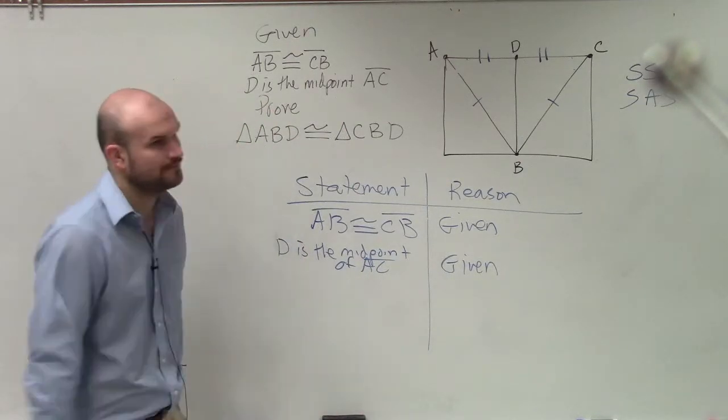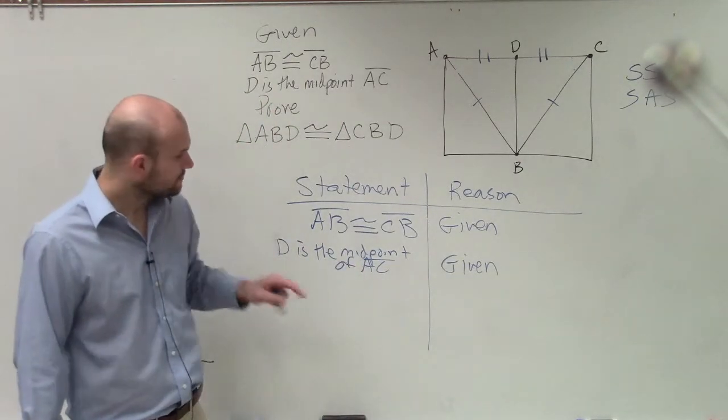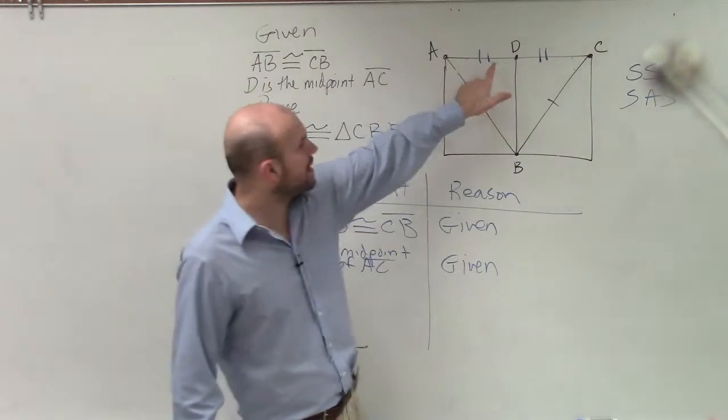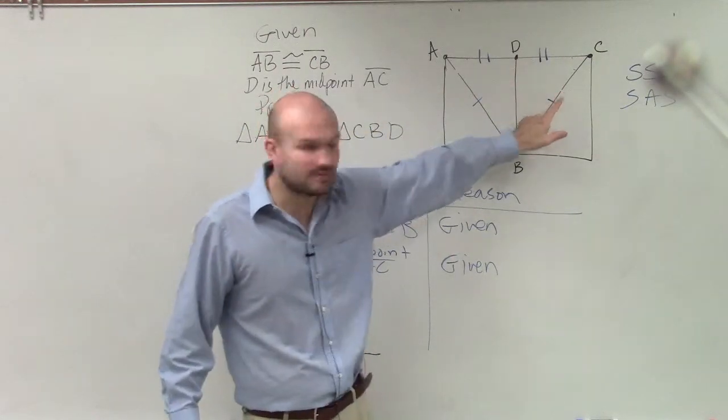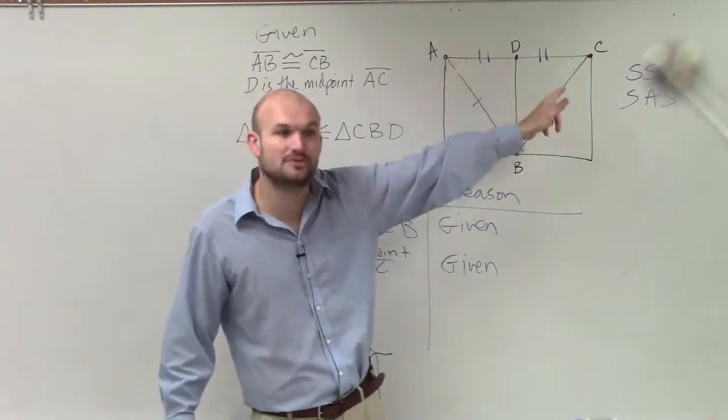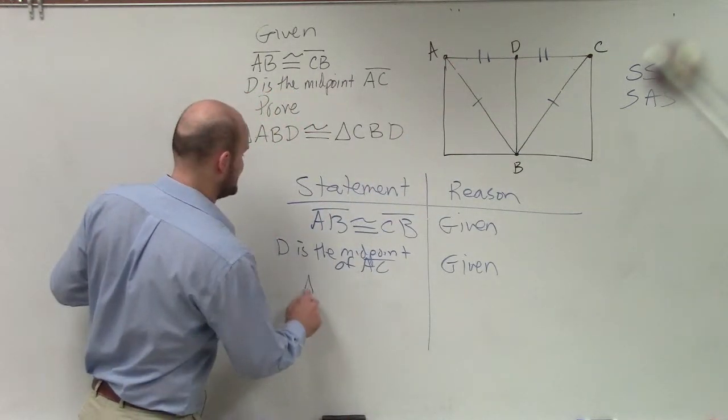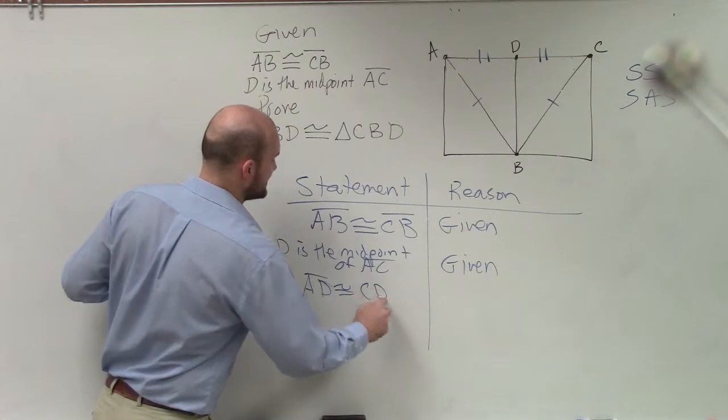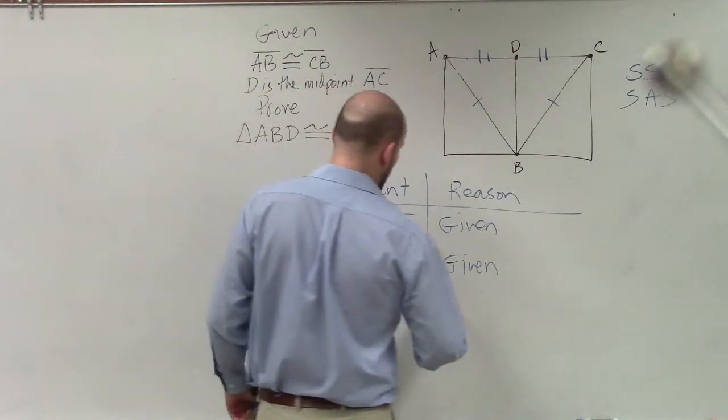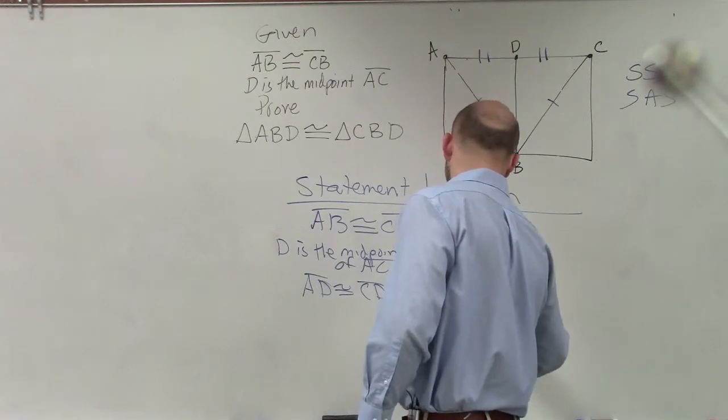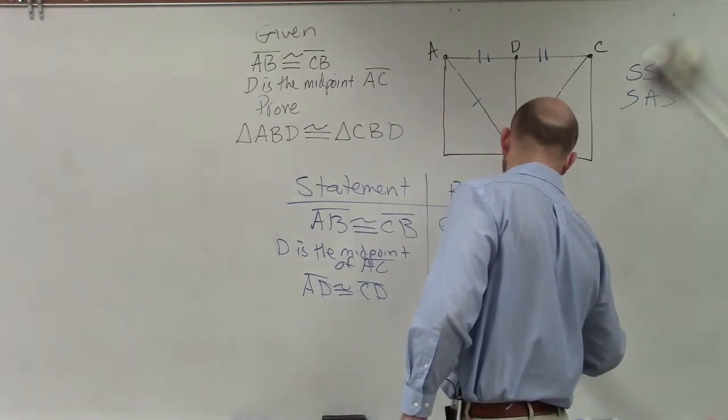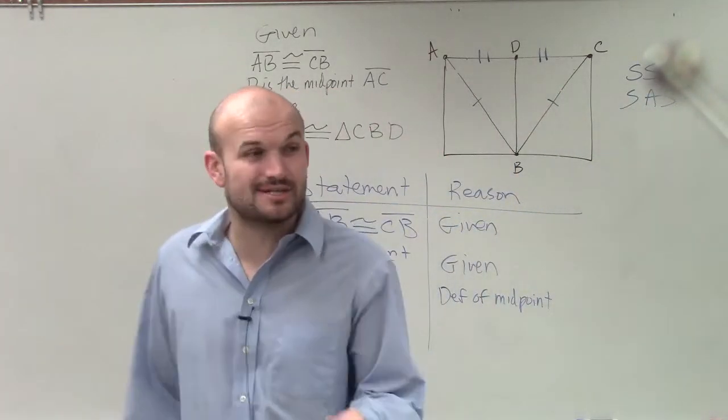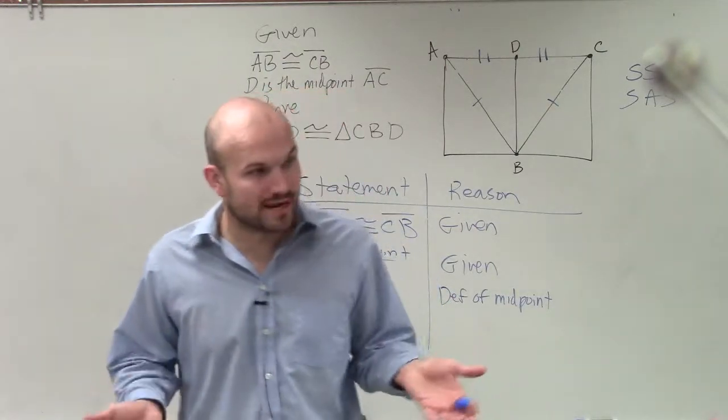So now we just need to say, well, we already know that those two are congruent to each other. But how am I going to say that these two are congruent to each other? Just because this says D is the midpoint, that doesn't tell us those two are equal to each other. So I can say that AD is congruent to CD, and the reason why is the definition of a midpoint. Because if you have a midpoint of a line segment, that's going to separate that line segment into two equal measures.